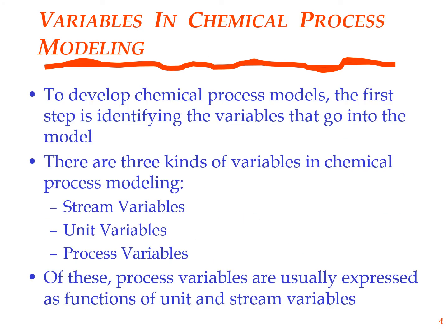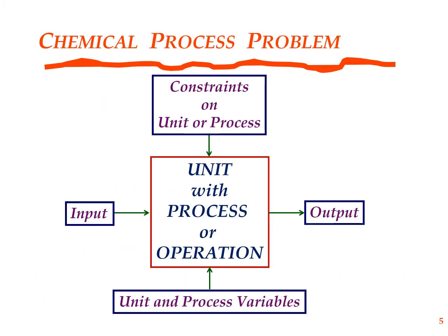What are the three types of variables? Stream variables, unit variables, and process variables. The stream variables are those of input streams or output streams, and then we have the unit and process variables. The mathematical model per se is the set of constraints or equations that we have on these variables.